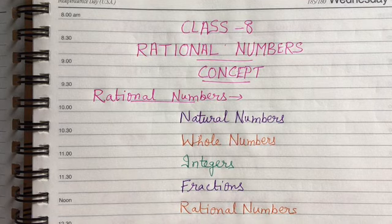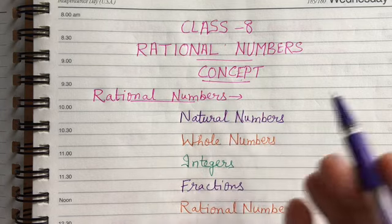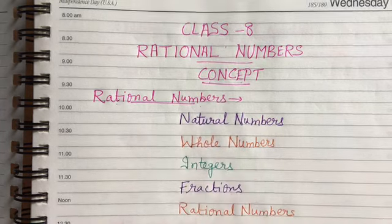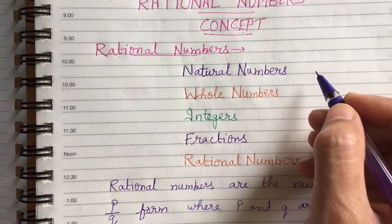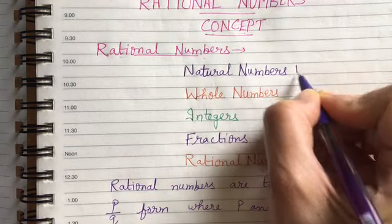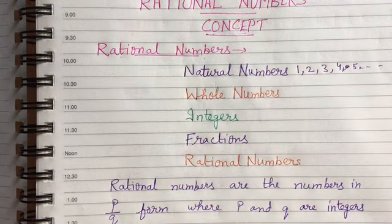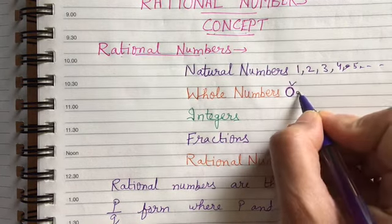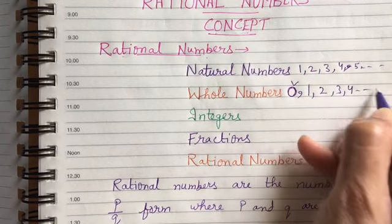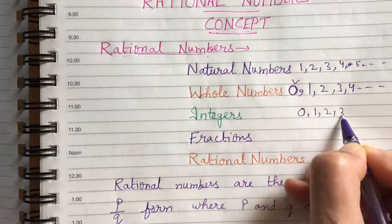Today we are going to discuss the first chapter concept of Class 8 which is rational numbers. We will discuss the concepts. Now, what comes to your mind when I say counting? It will be 1, 2, 3, 4, 5, 6, 7, 8 — these are called natural numbers. But in this one we have one thing missing, that is 0. So if we include 0 in this, then it will become whole numbers.